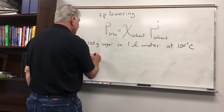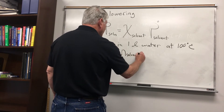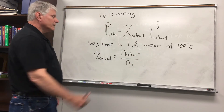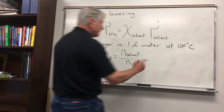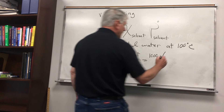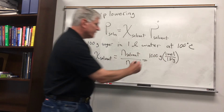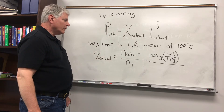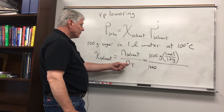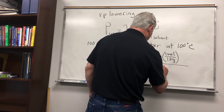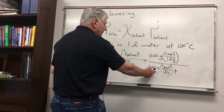We need to find the mole fraction. The mole fraction of the solvent equals the moles of solvent divided by the total number of moles in the solution. In the numerator, we have one liter of water, which is 1000 grams, multiplied by one mole per 18 grams — that's the molecular weight of water — giving us the moles of water. In the denominator, we need the total moles: moles of water plus moles of sugar.